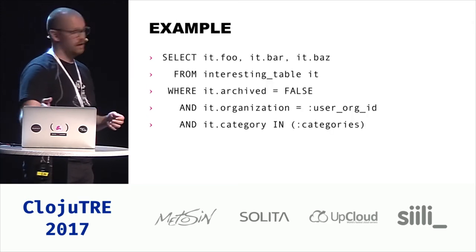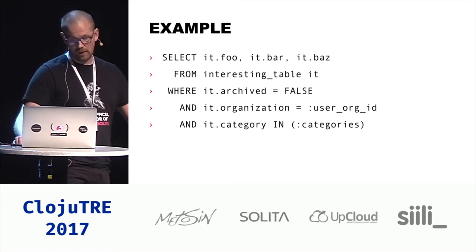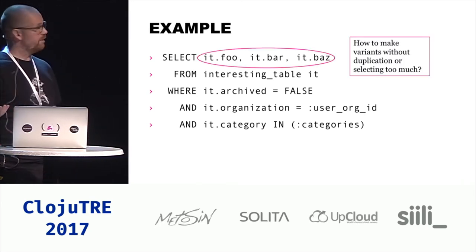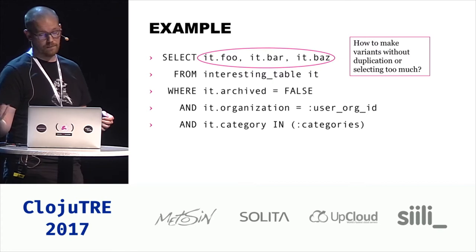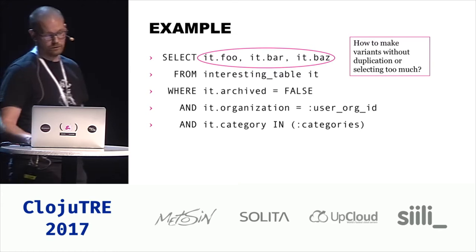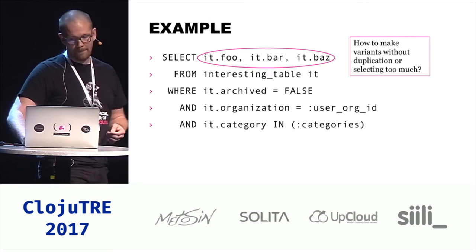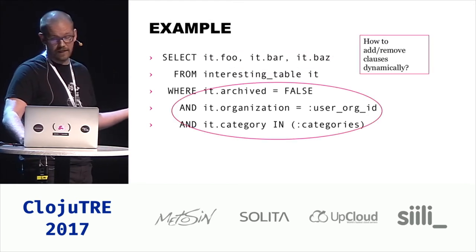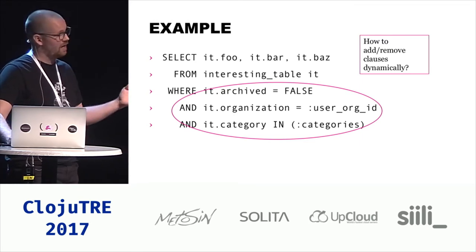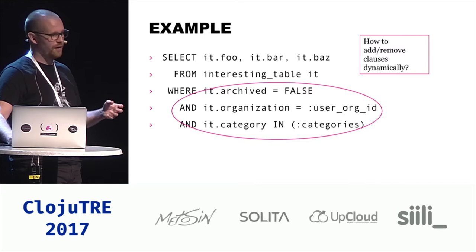Let's take an example. Say we have a table called InterestingTable. We're querying three columns — itfoo, itbar, and itbaz — from it with these where parameters. How do we make variants without duplication or selecting too much? You could select everything with it.star, but that will be suboptimal for most use cases. And how do you add these dynamically without causing duplication? HugSQL has support, so you could template this, but I think it's undignified to write Clojure code in the comments of another language.